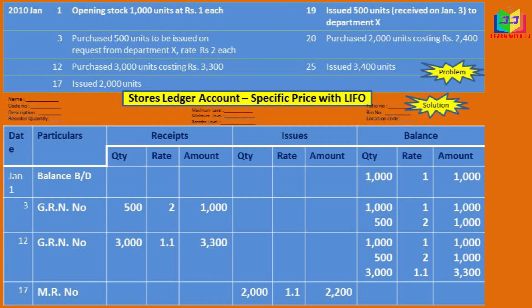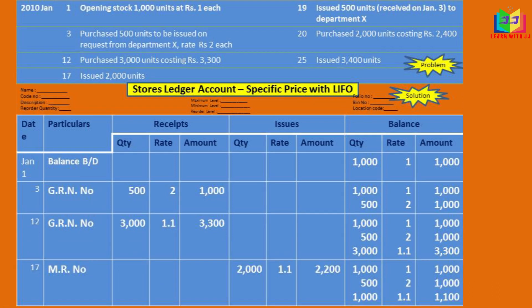On the 17th, we have an issue of 2000 units. Since it is a LIFO method, we have to issue from the last batch. We have 3000 units, so we will issue 2000 units from that. The balance will be 1000 units, 500 units, and 1000 units. After issuing the 2000 units, at last we have 1000 units remaining.